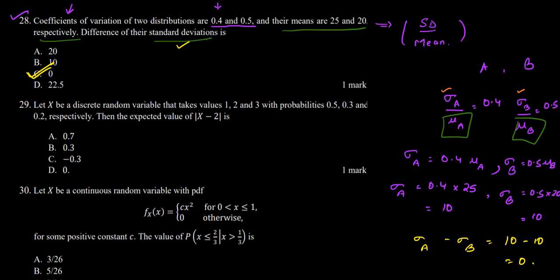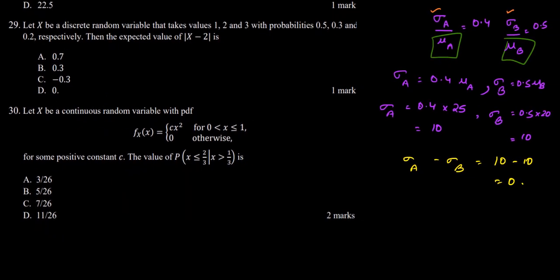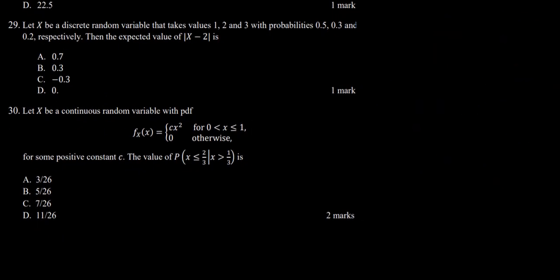Moving on to question number 29: let X be a discrete random variable that takes values 1, 2, and 3 with probabilities 0.5, 0.3, and 0.2 respectively. Here we have a random variable X whose possible values are 1, 2, and 3, and the probabilities of occurrence sum up to 1.